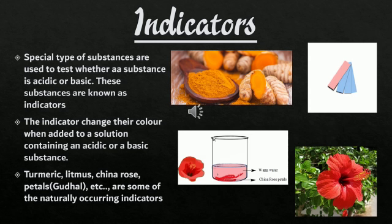Now, regarding acids and bases — I gave a few examples to taste, and those substances are edible. But what about other substances? How can we find out the acidic or basic nature of substances we cannot taste? For that, we have some indicators to check whether a substance is an acid or a base. There are a few substances which can't be tasted, and we want to check their nature. These special substances used to test whether a substance is acidic or basic are known as indicators.